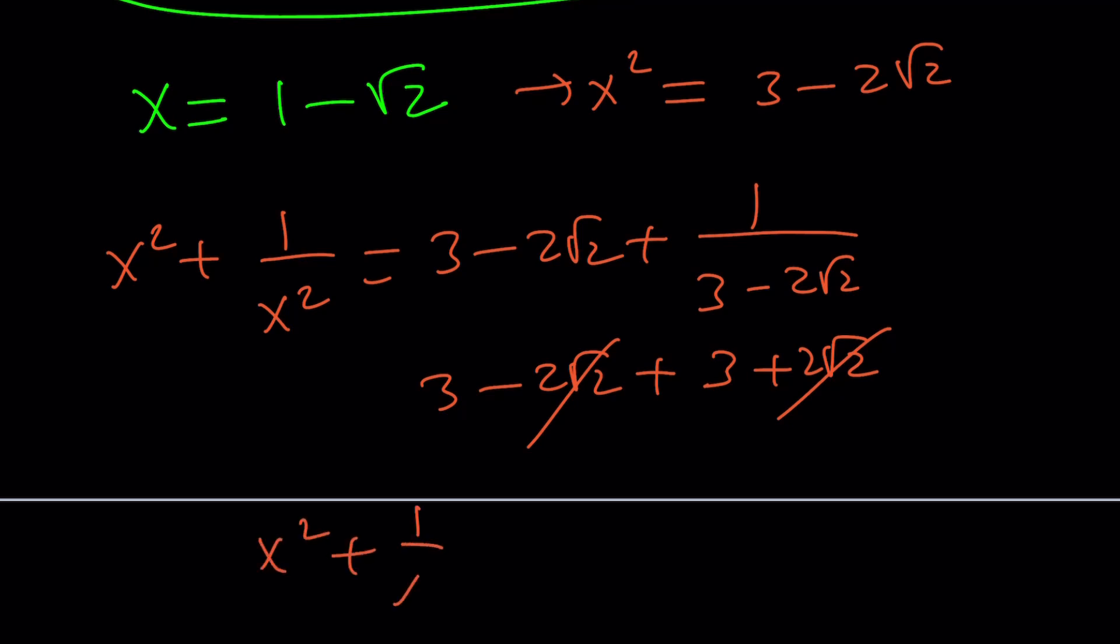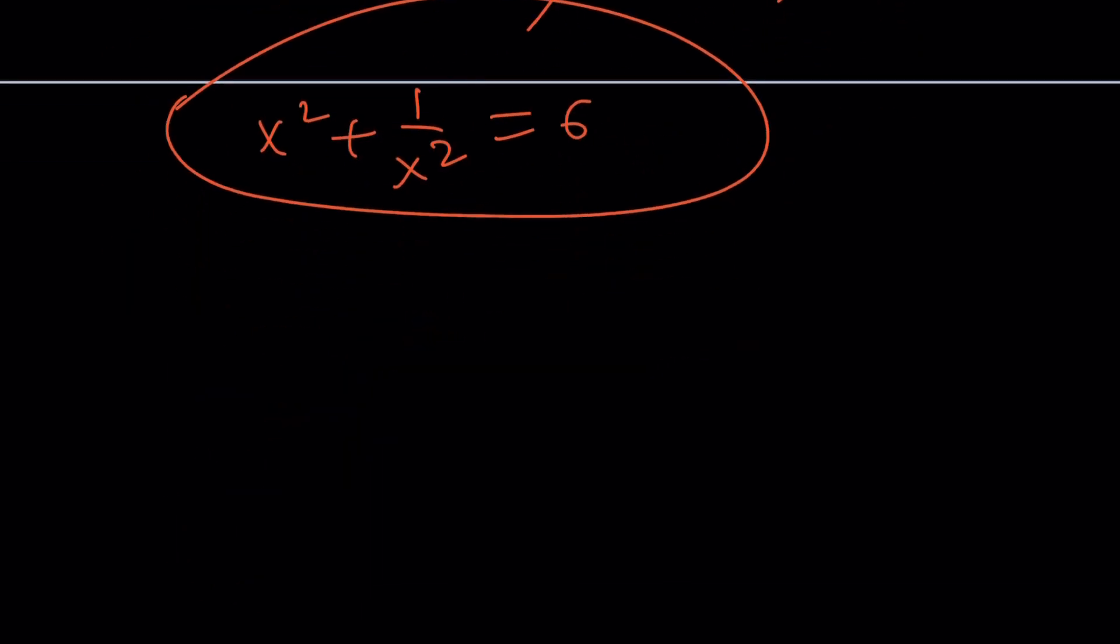They cancel out, and we end up with the same answer. Again, x squared plus 1 over x squared is equal to 6. Awesome.